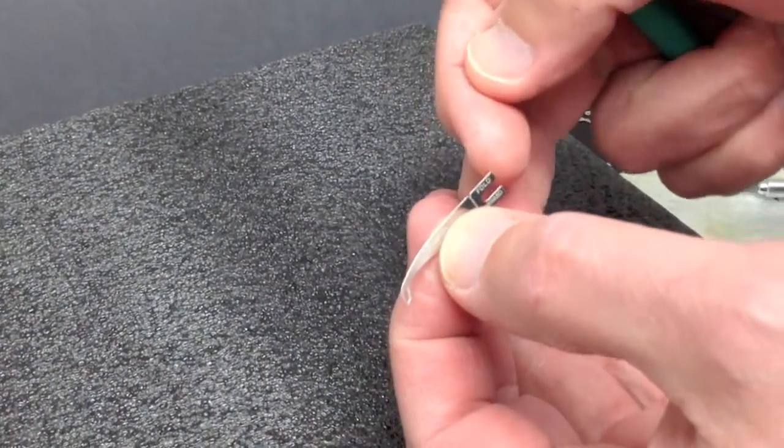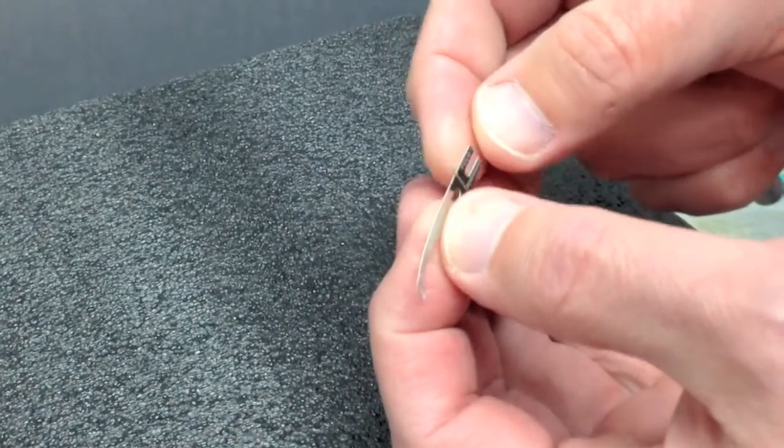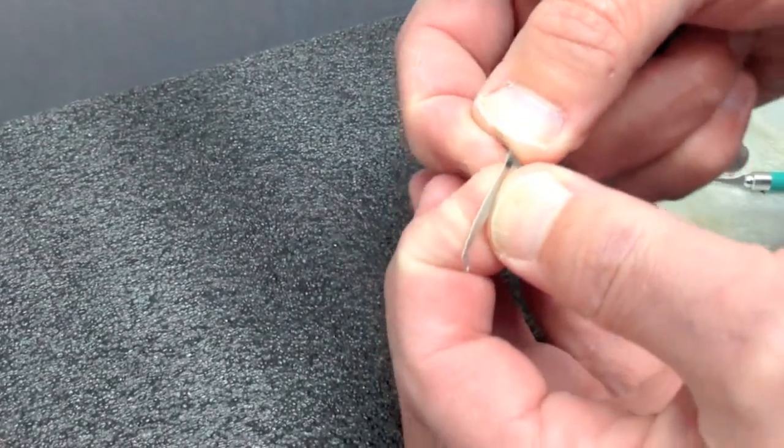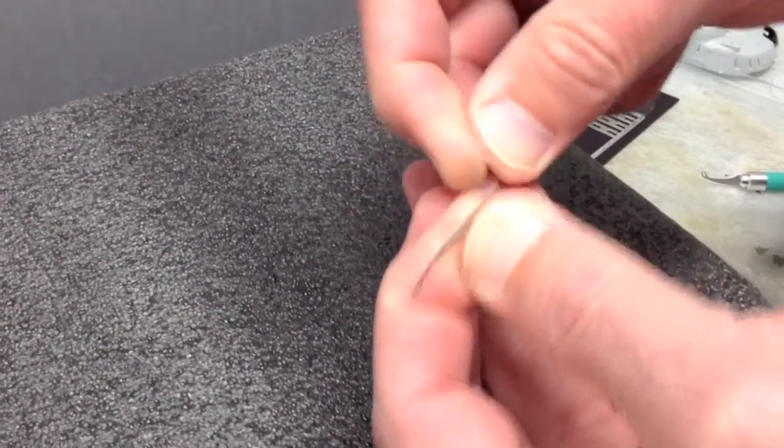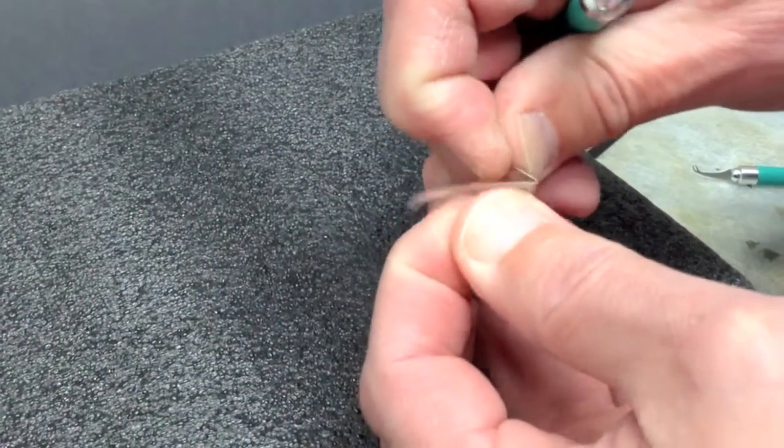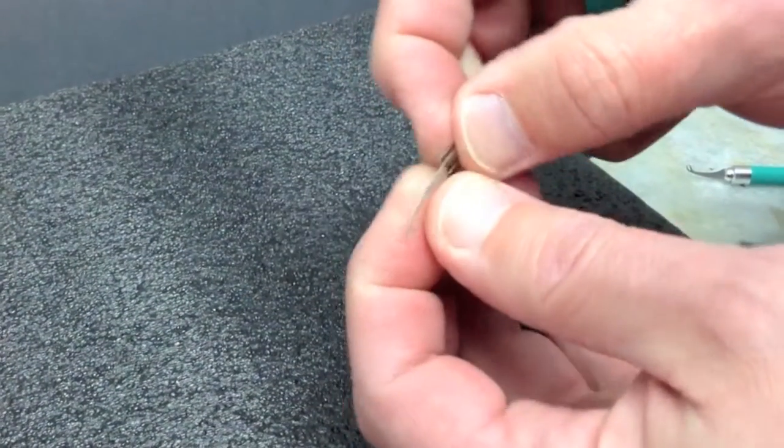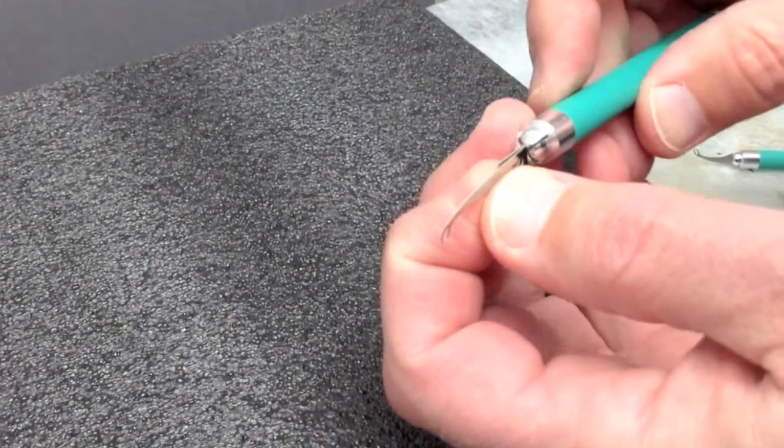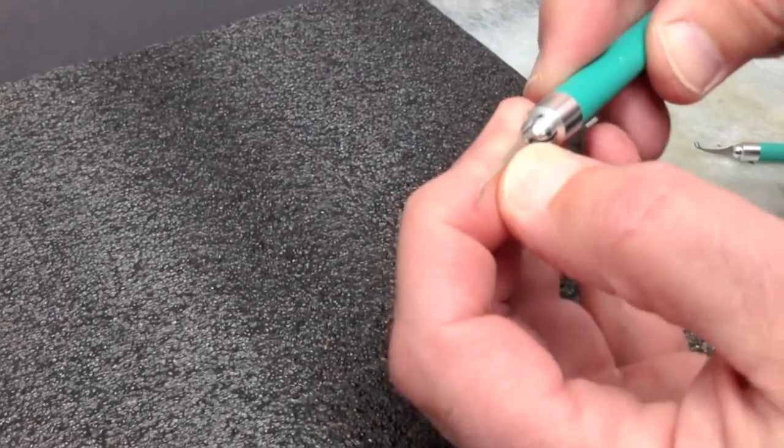And then you're going to notice that there's ears on the back. So what you're going to do is either fold those forward or backwards, and this makes the looper twice as thick. It makes it the same thickness as a hobby knife blade for which the handle was intended.